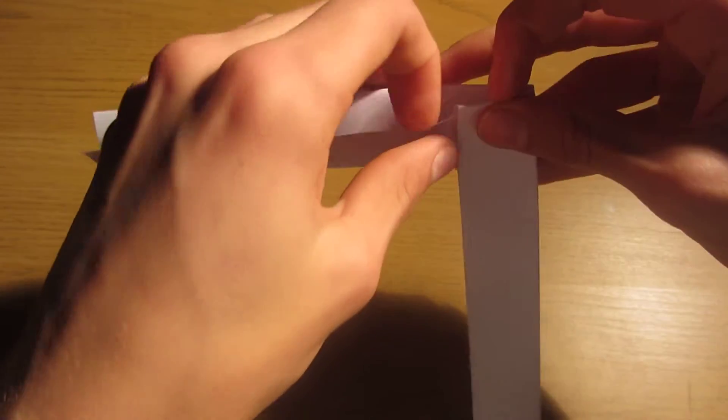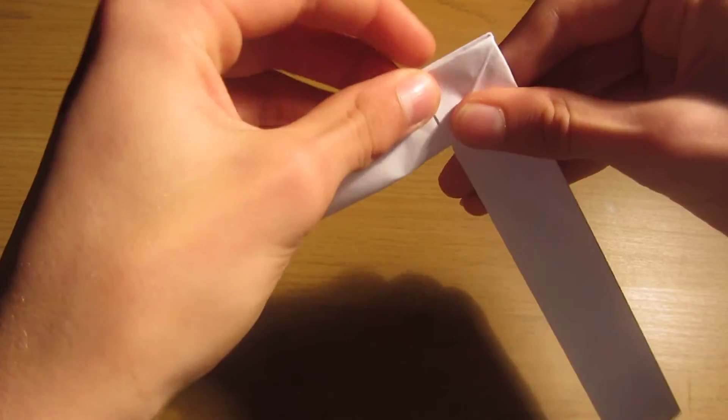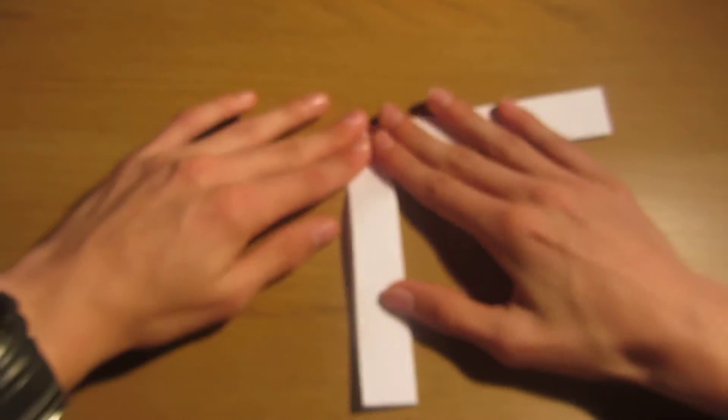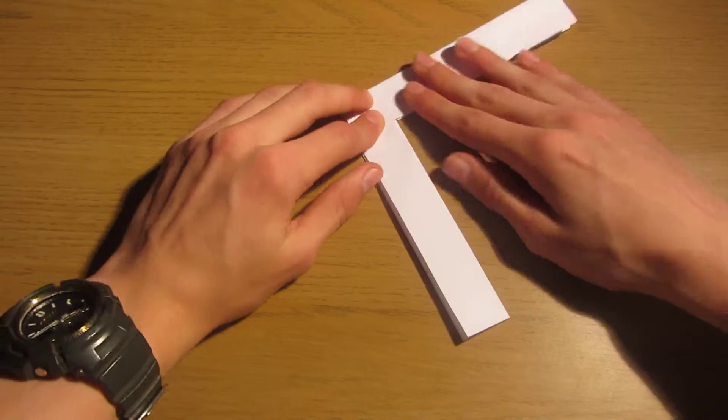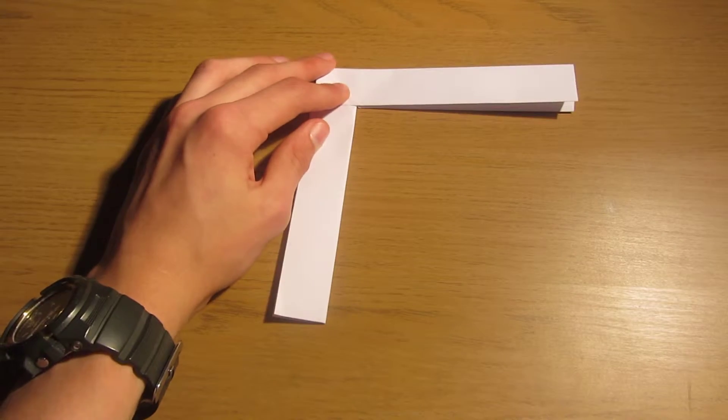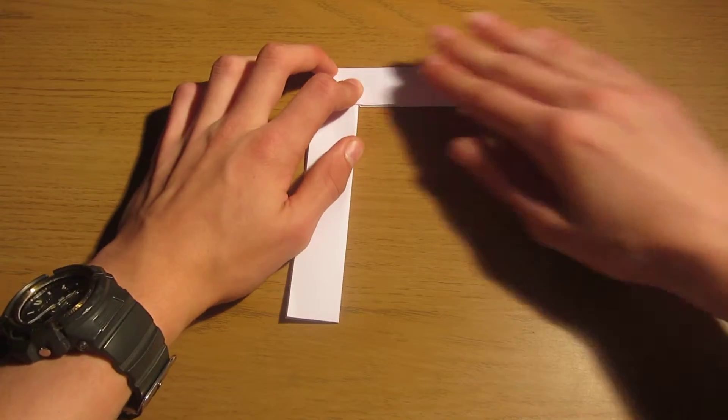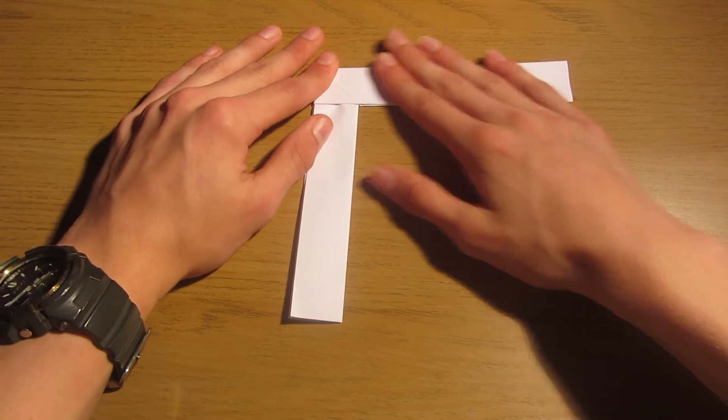So that is now locked. And then crease. We need very, very good creases in this piece to make a really good boomerang. Like that.